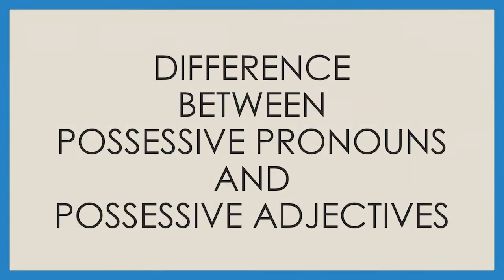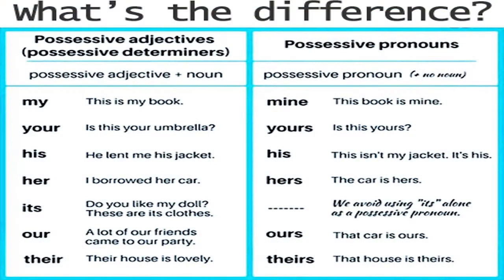But how do we distinguish possessive pronouns from possessive adjectives? A possessive adjective is also used to show ownership, but how is it different? The difference is actually very clear. Possessive adjectives come before a noun in the sentence. For example, 'This is my book.' The possessive adjective, my, is placed before the noun, book.